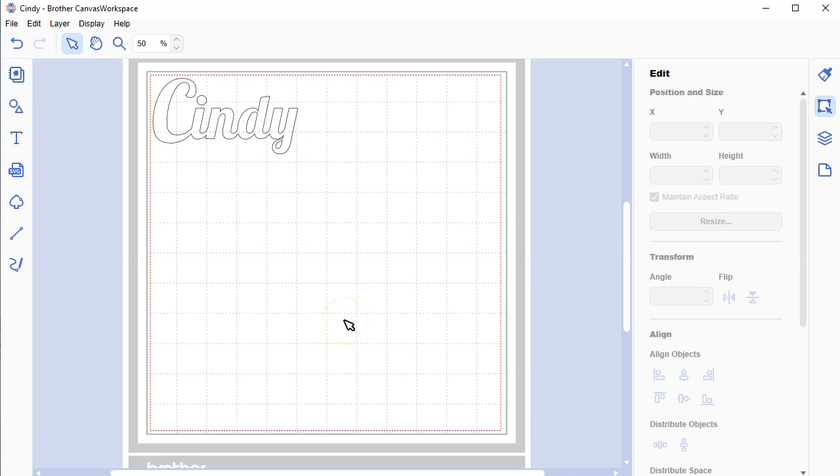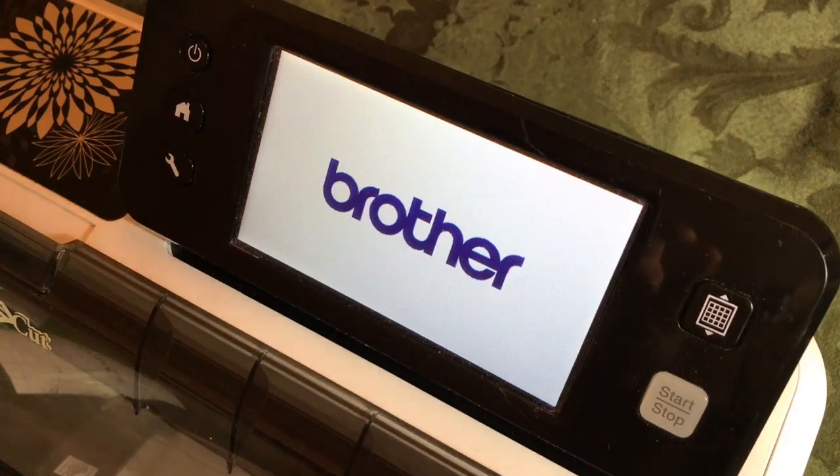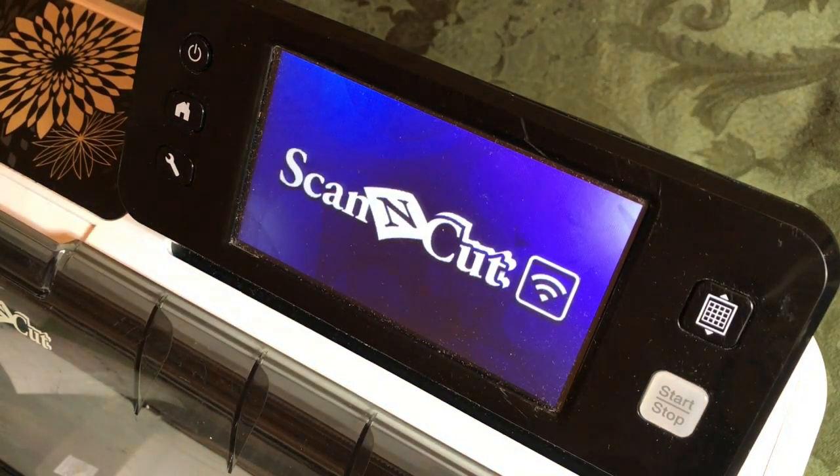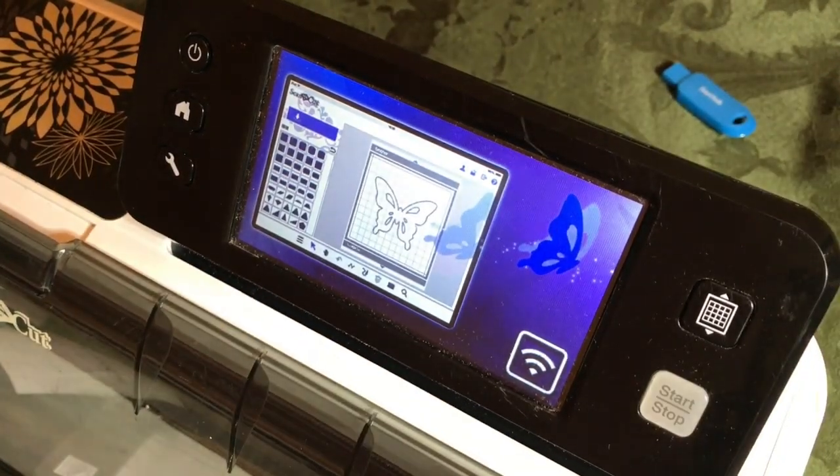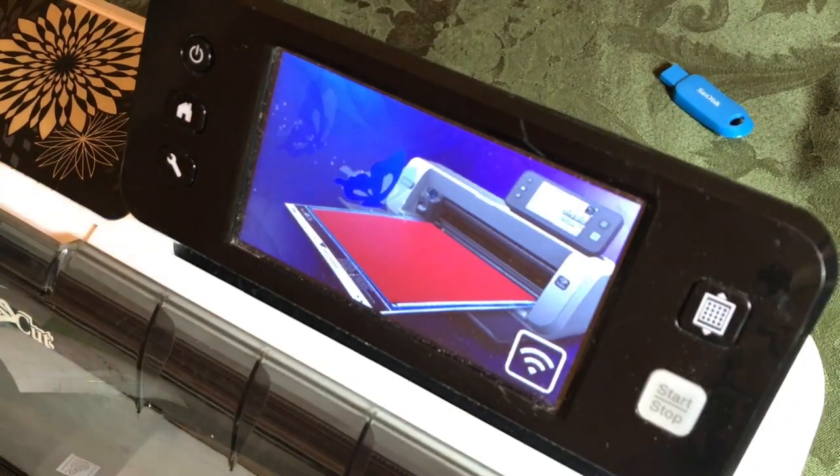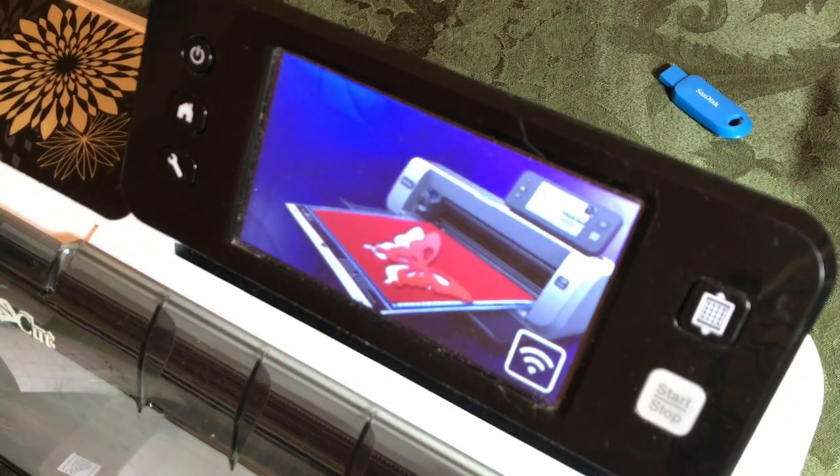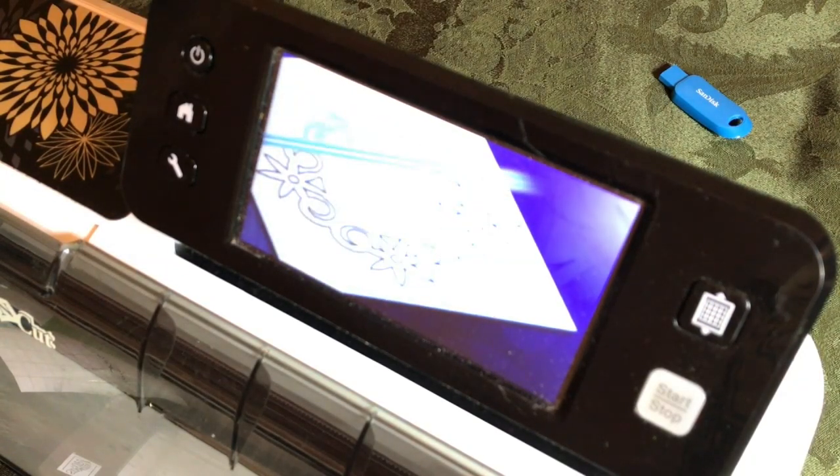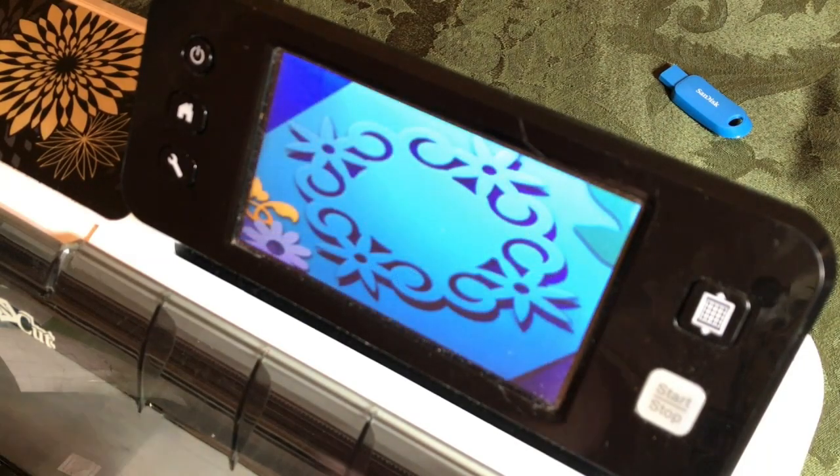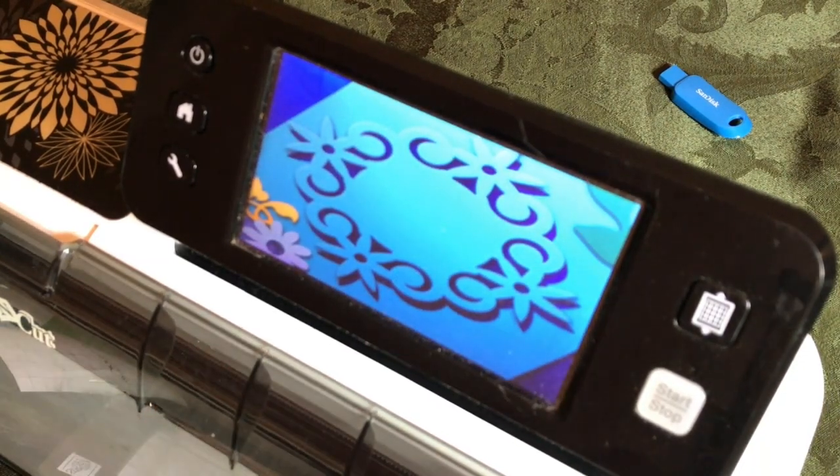Now that the file is saved to the USB drive, I will see you in the next section of this tutorial, where we will retrieve the file from our machine and cut it out using vinyl. Thank you. In this section of the tutorial, you will learn how to retrieve the data from the USB stick that we saved it to from inside of canvas workspace. You will learn how to cut that file out using some really neat holographic vinyl. We will transfer it to transfer tape and onto the machine to personalize your scan and cut. So let's get started.